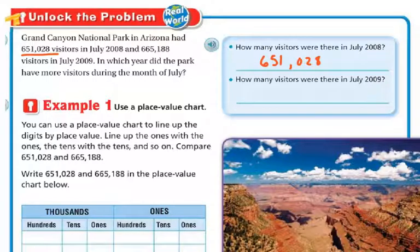The next question asks, how many visitors were there in July of 2009? Well, that's right here. There's my visitors in July. So it's going to be 665,000—remember the comma says thousand—188.